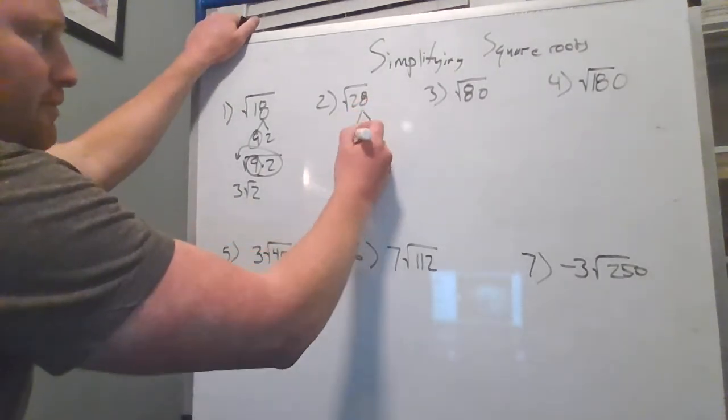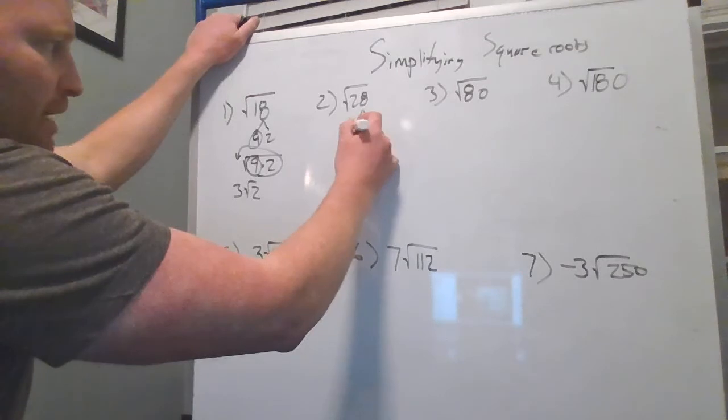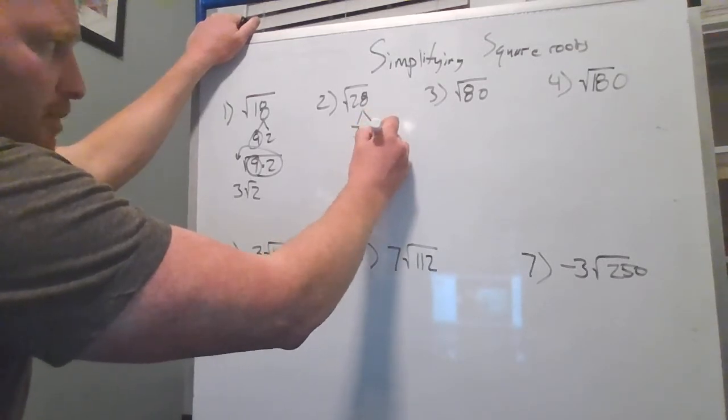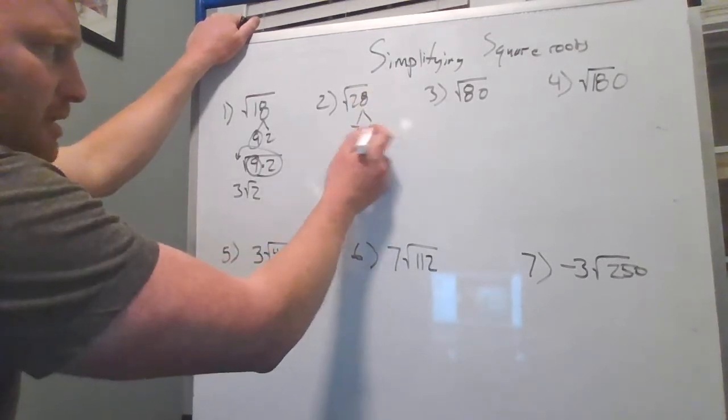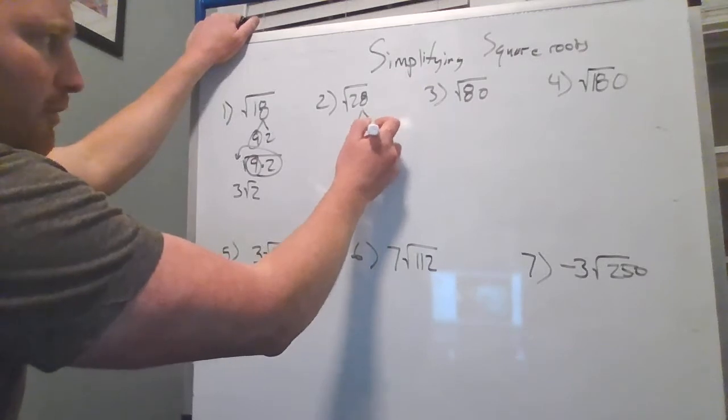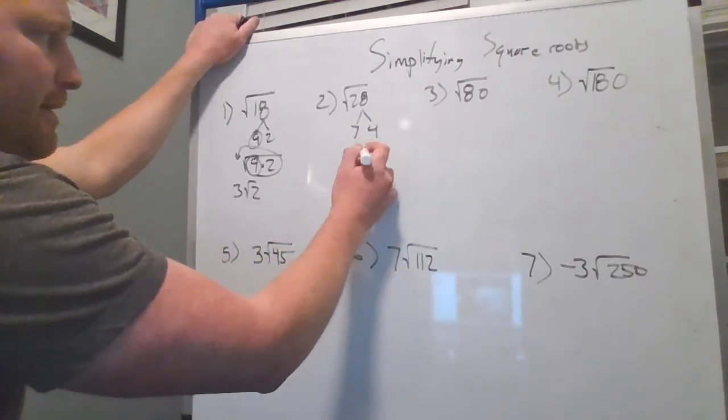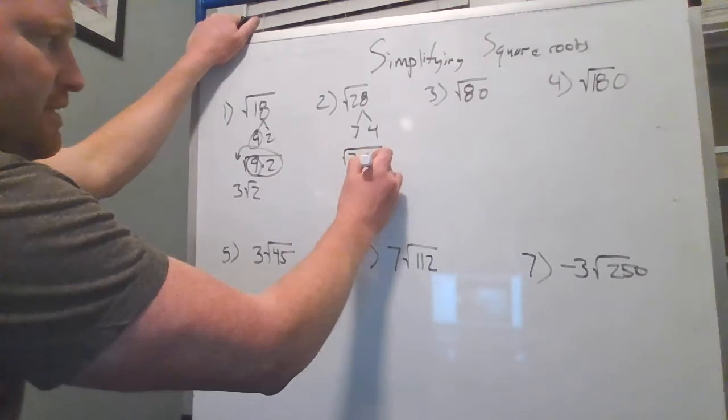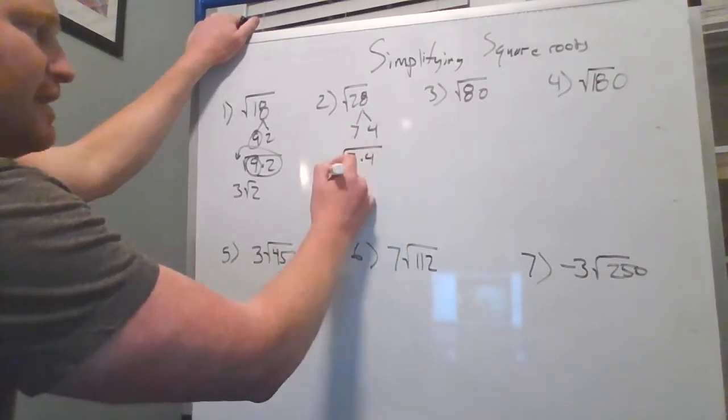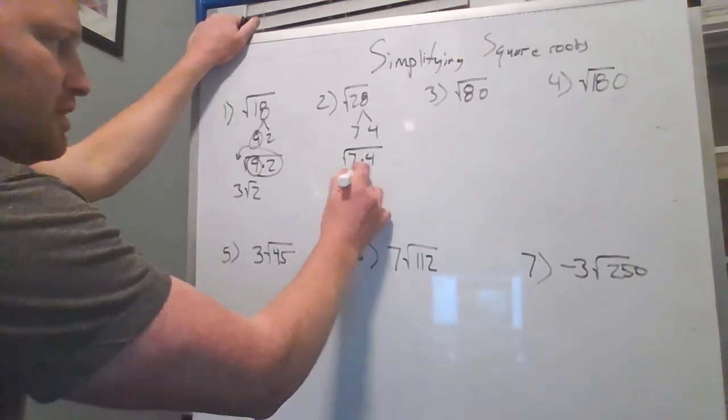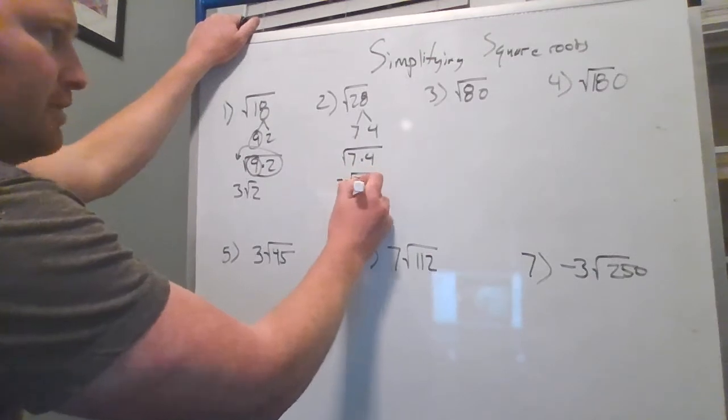Let's look at 28. Right off the bat, I know 7 and 4 are my factors of 28, and this is as far as you need to go because I got a perfect square factor. I know this is square root of 7 times 4, and this 4 comes outside as a 2, so this is now 2 radical 7.